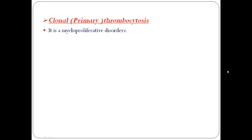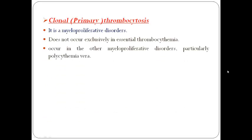Clonal thrombocytosis is a myeloproliferative disorder — a group of related disorders of the hematopoietic stem cells. It does not occur exclusively in essential thrombocythemia; it may also occur in other myeloproliferative disorders, especially polycythemia vera. It may be associated with myelodysplastic syndrome characterized by deletion of the long arm of chromosome 5, representing one of the mixed myelodysplastic/myeloproliferative syndromes. The elevated platelet count in essential thrombocythemia and other myeloproliferative disorders is referred to as clonal thrombocytosis.